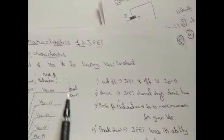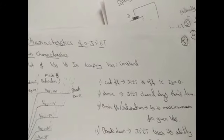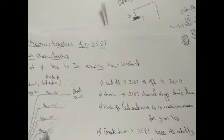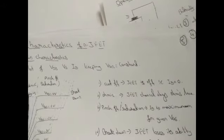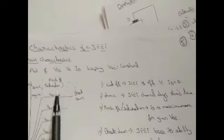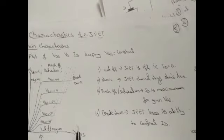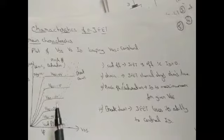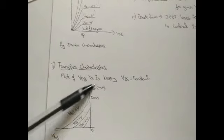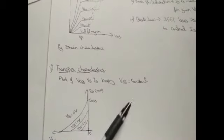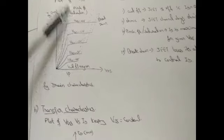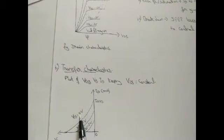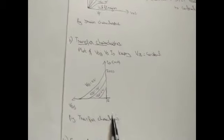The transfer characteristics are a plot of VGS versus ID with VDS held constant. Previously VGS was constant and VDS was varied; now VDS is held constant and VGS is varied. The square law expression for ID in the pinch-off region is: ID = IDSS × (1 − VGS/VP)². To find VGS from ID, the formula rearranges to: VGS = VP × √(1 − ID/IDSS).